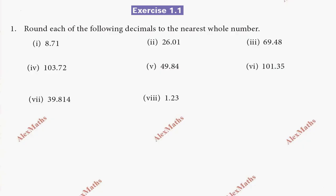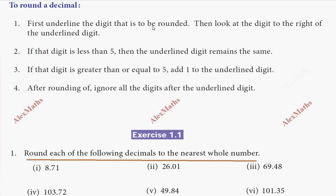Hi students, this is Alex here. Question number one: round each of the following decimals to the nearest whole number. First, underline the digit that is to be rounded.